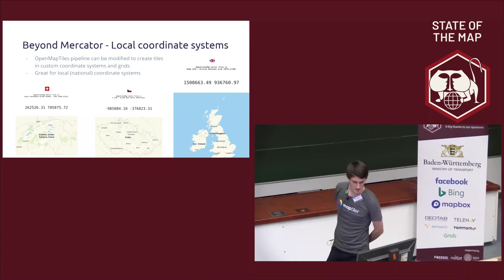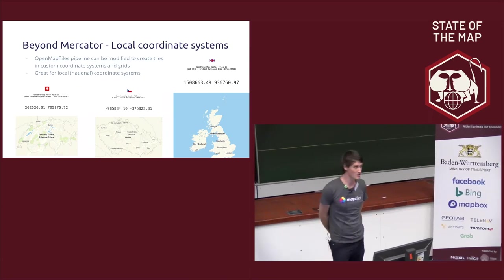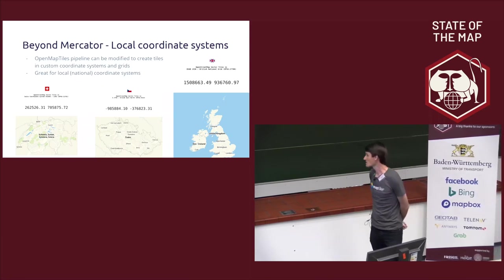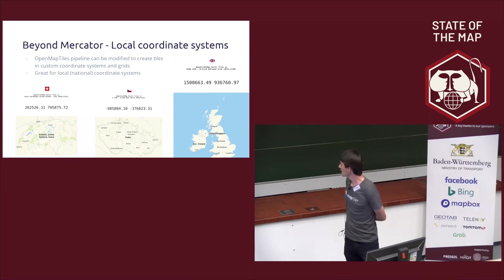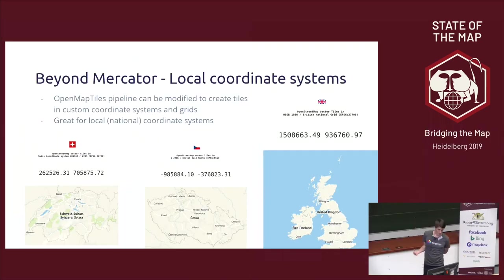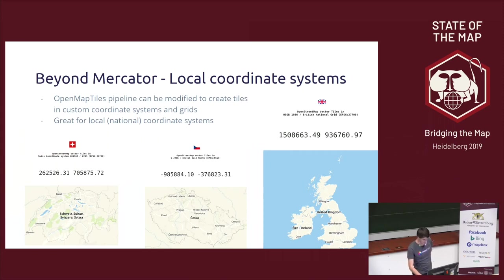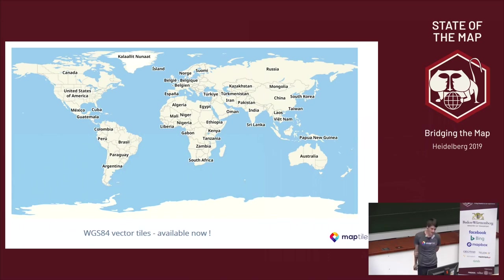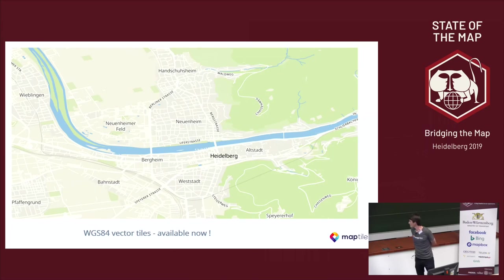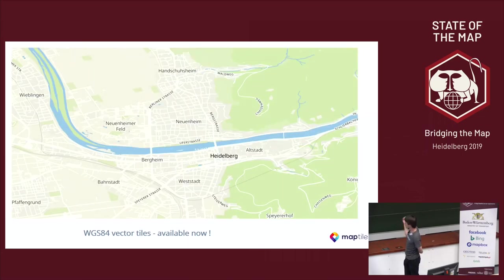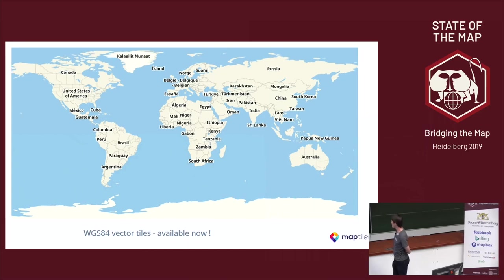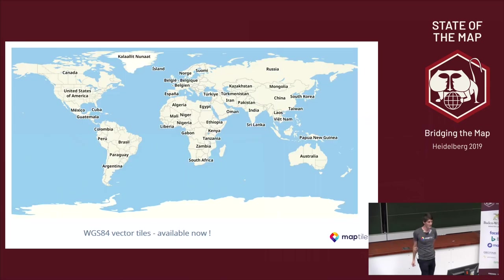A lot of those local coordinate systems were created, and they are still in use even in modern days, even for some small countries like Switzerland or Czech Republic where this issue is not that big. However, it still stays, and probably will stay, because it's required by governments and some official bodies. Here you can see the WGS84 vector tiles in WGS84 projection, which is already available on the MapTile cloud — you can go there and start using it.